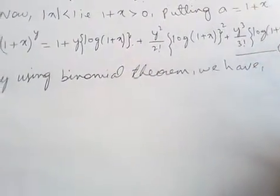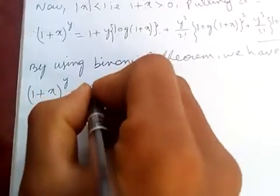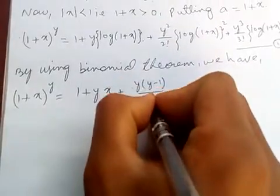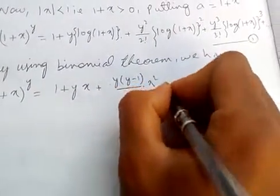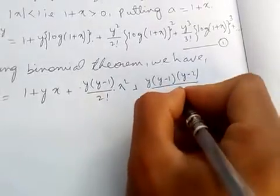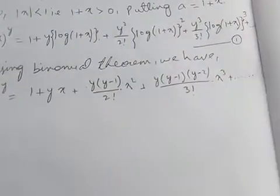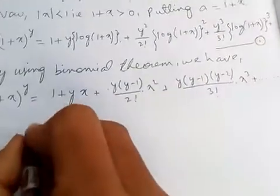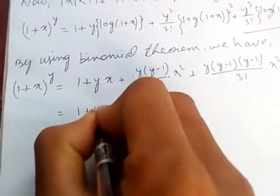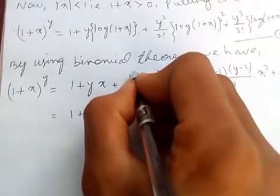Now, by using the binomial theorem, we have (1 + x) to the power y equals one plus x·y plus y(y minus 1) by 2 factorial times x squared, plus y(y minus 1) by 3 factorial times x cubed, plus and so on.